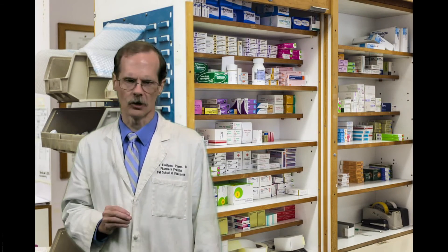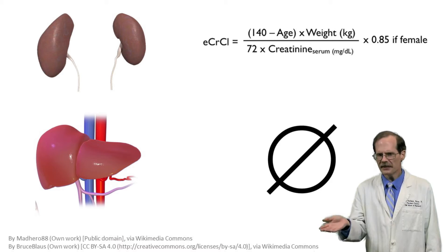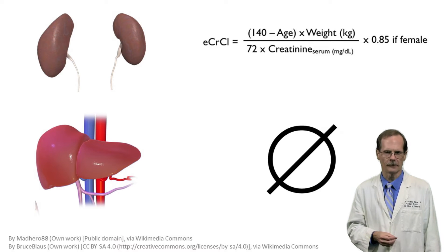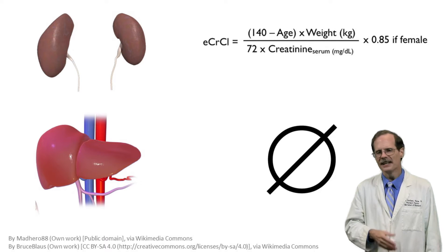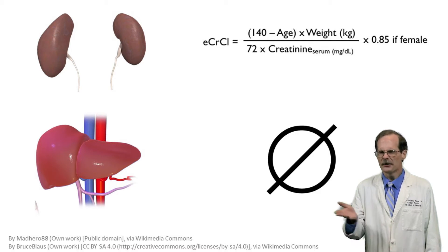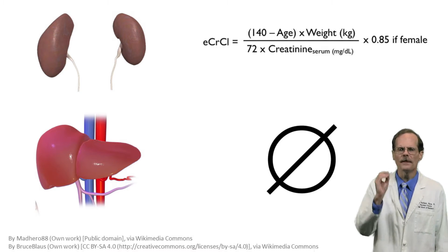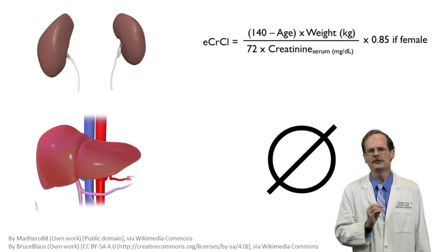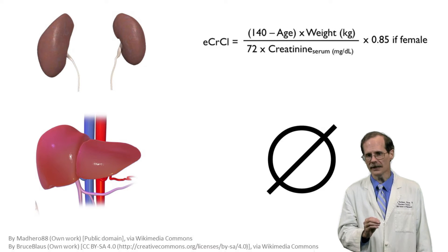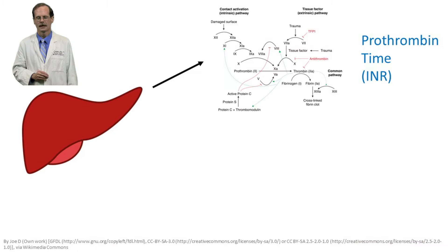It's very difficult to quantify degree of liver function. With the kidneys, it's possible to estimate glomerular filtration rate to get a general idea of the patient's renal function, but there isn't an analogous number available for the liver. Instead, we have to look at what the liver is supposed to be doing and how well it's doing it.